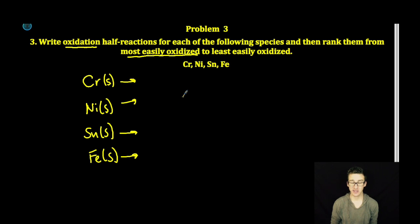Keep in mind since we're doing oxidation, we're going to be losing electrons and they'll be written on the right-hand side of our half-reaction as we form the ions to these metals.